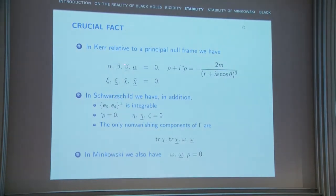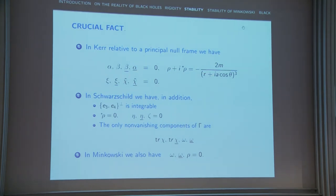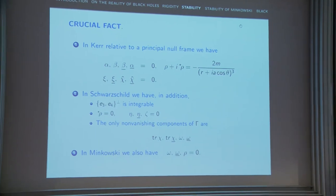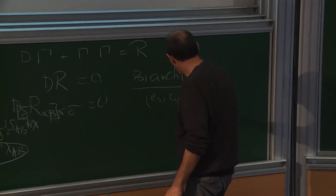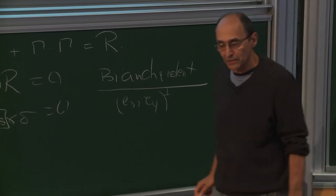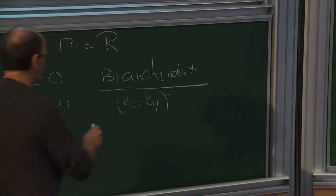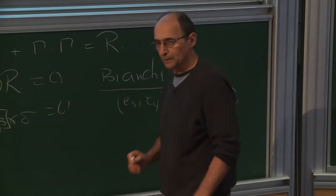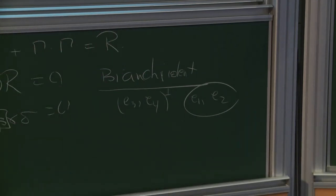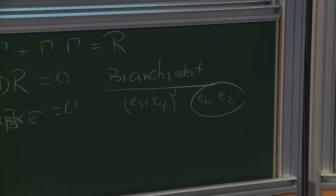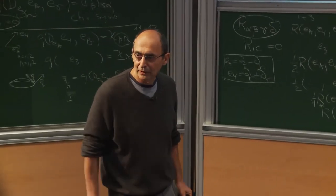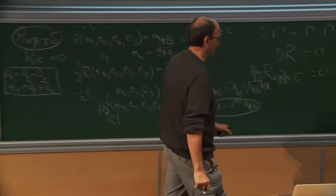In the principal null frame, many components vanish due to special cancellations — that's why the principal null frame is so important. However, in Kerr, the distribution perpendicular to e3 and e4 (spanned by e1, e2) is not integrable. So you don't get two surfaces, which is quite remarkable and another reason why Kerr is so complicated. In particular, chi_{1,2} and chi_{2,1} are different — you don't get the symmetry of a true second fundamental form.